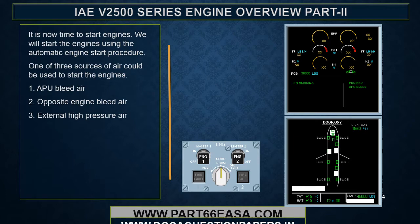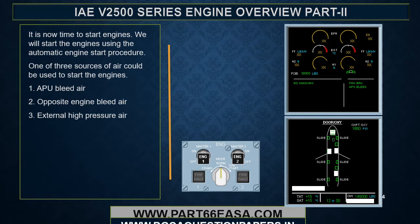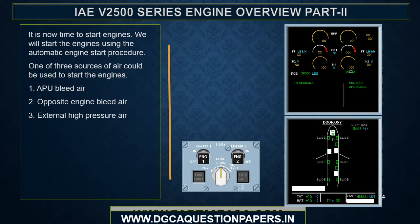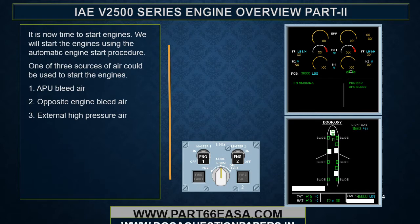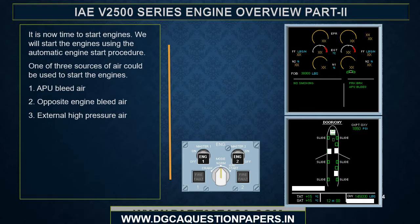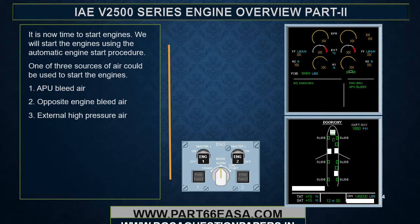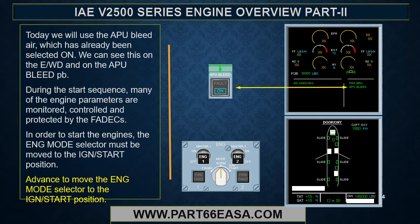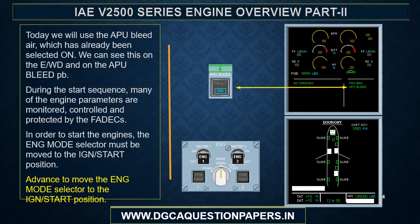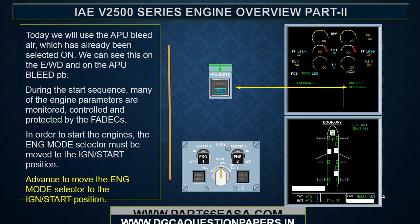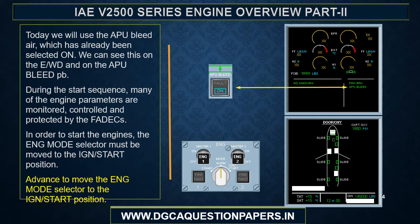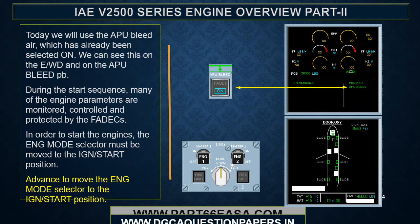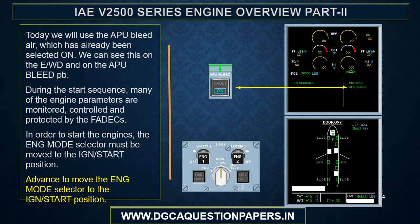It is now time to start engines. We will start the engines using the automatic engine start procedure. One of the three sources of air could be used to start the engines: APU bleed air, opposite engine bleed air, or external high pressure air. Today we will use the APU bleed air, which has already been selected on. We can see this on the EWD and on the APU bleed push button.